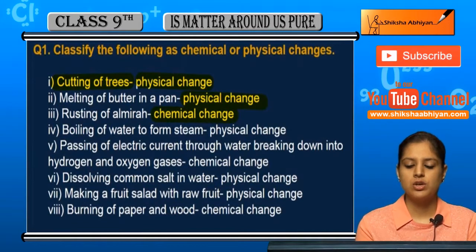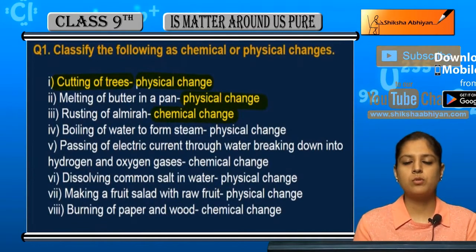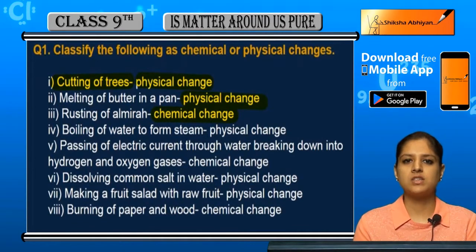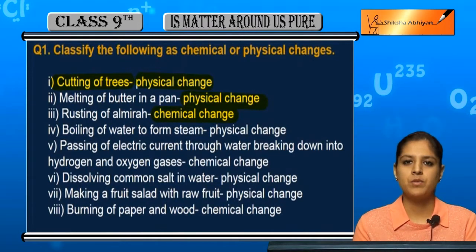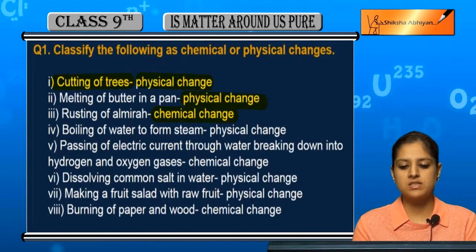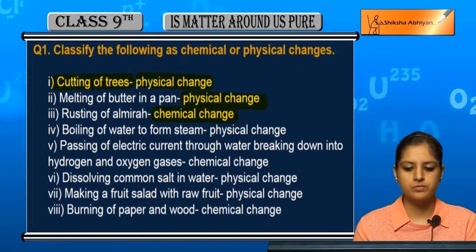Rusting of iron is a chemical change because it is a coating of its oxide layer — a new oxide substance is formed — and because of that, rusting is a chemical change.